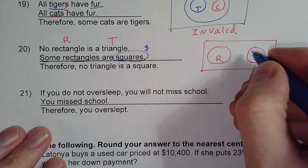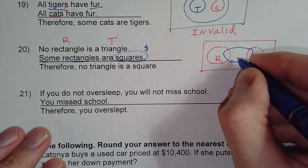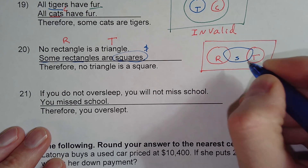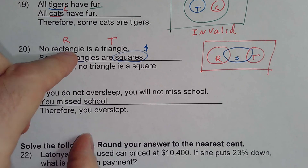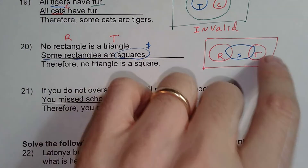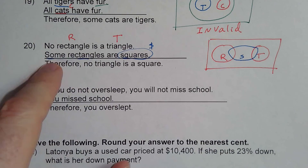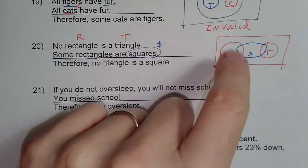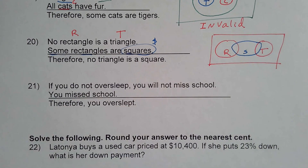If I draw S overlapping T, my premises are still satisfied — no rectangle is a triangle (true), and some rectangles are squares (yes, there's overlap) — but I've made the conclusion fail. So this is also an invalid argument.